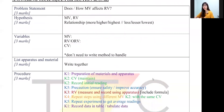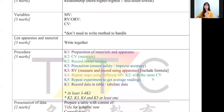Next we have variables. Only write MB, RV, and CV — you don't have to write the method. By writing MB, RV, and CV you get one mark each. For apparatus and materials, you can write them together or separately — it's your choice. In Chemistry you have to separate them, but in Biology you don't have to.